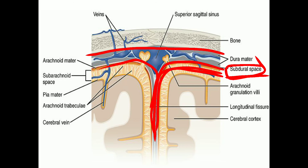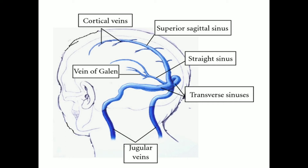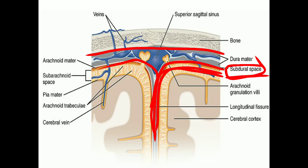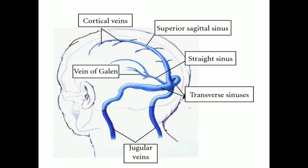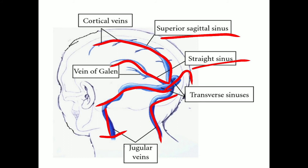There are venous sinuses — here you can see the superior sagittal sinus present superiorly, between the outer layer and the inner layer of the dura mater. Venous blood from the brain drains into these sinuses. There is also the transverse sinus on both sides and the straight sinus. All of them drain into veins, which carry away deoxygenated blood from the brain.